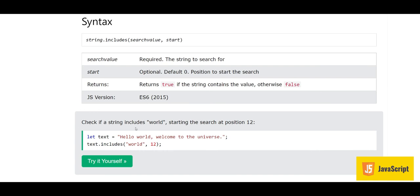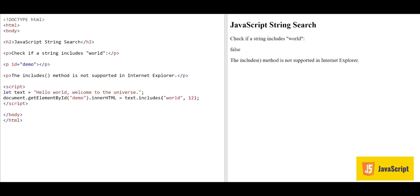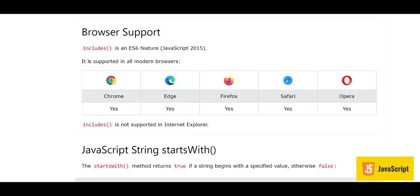For example, if we check whether the string includes 'world' starting the search at position 12, the answer is false, because 'world' appears before index 12, not after it. Regarding browser support, includes is an ES6 feature supported in all modern browsers, however it is not supported in Internet Explorer.